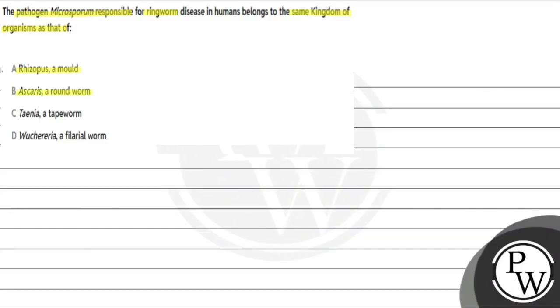The options are: Rhizopus, a mold; Ascaris, a roundworm; Taenia, a tapeworm; Wuchereria, a filarial worm. Let's see the key concept here.